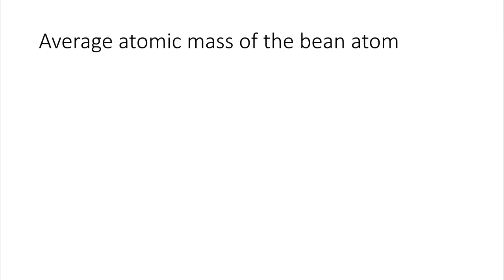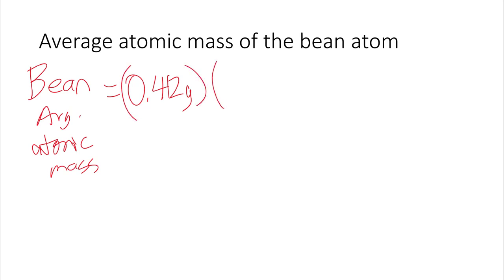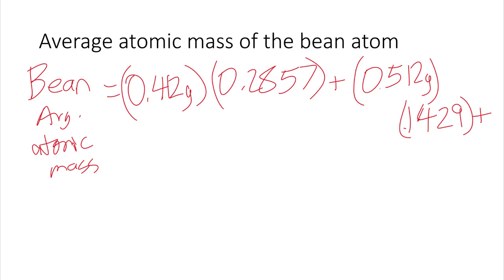The bean average atomic mass is equal to 0.412 grams times 0.2857 plus 0.512 for the pinto beans times 0.1429, right? To turn a percent into a decimal, you got to divide it by 100. Plus, for the navy bean, 0.387 times 0.5714.